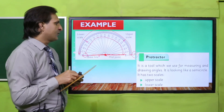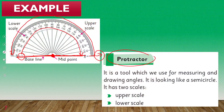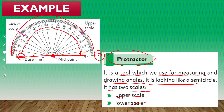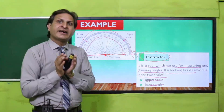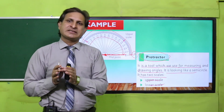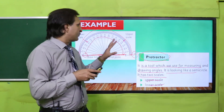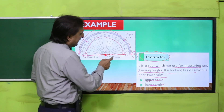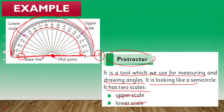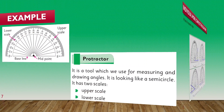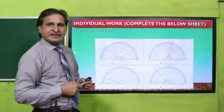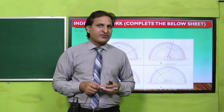Phir upar wali jo arm hogi usko dekhna hai ki kis scale ke upar jaake touch ho rahi hai — toh woh utne degree ka angle hoga. So, protractor kya hai? It is a tool which we use for measuring and drawing angles. It is looking like a semicircle. It has two scales — upper scale and lower scale — jiske baare mein maine aapko bata diya hai. Isko aapne memorize kar lena hai kyunki geometry mein iska bahut zyada wastha padne wala hai. Agar aapko is scale ki reading nahi aati toh is video ko again and again dekhein — aapko pata chal jaayega kaise protractor use karte hue angles ko measure karna hai.